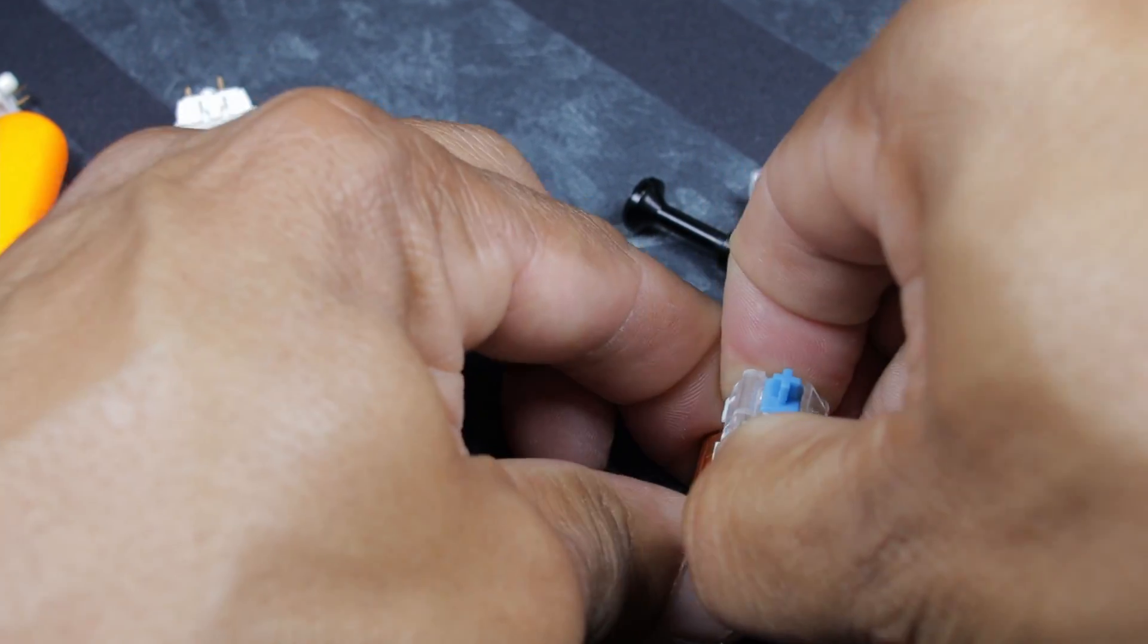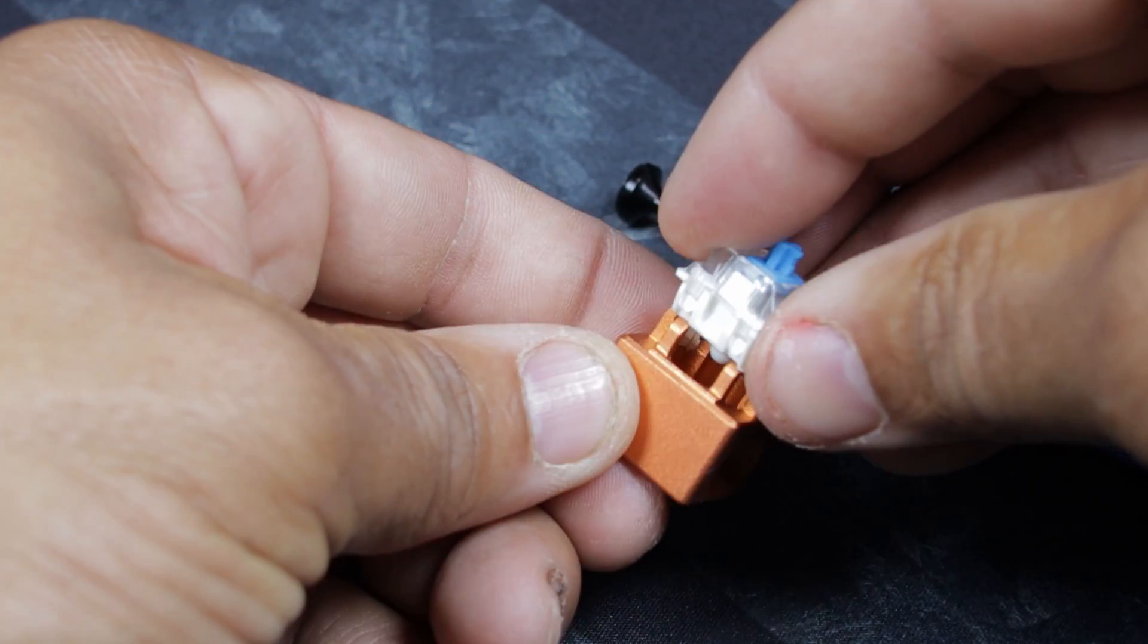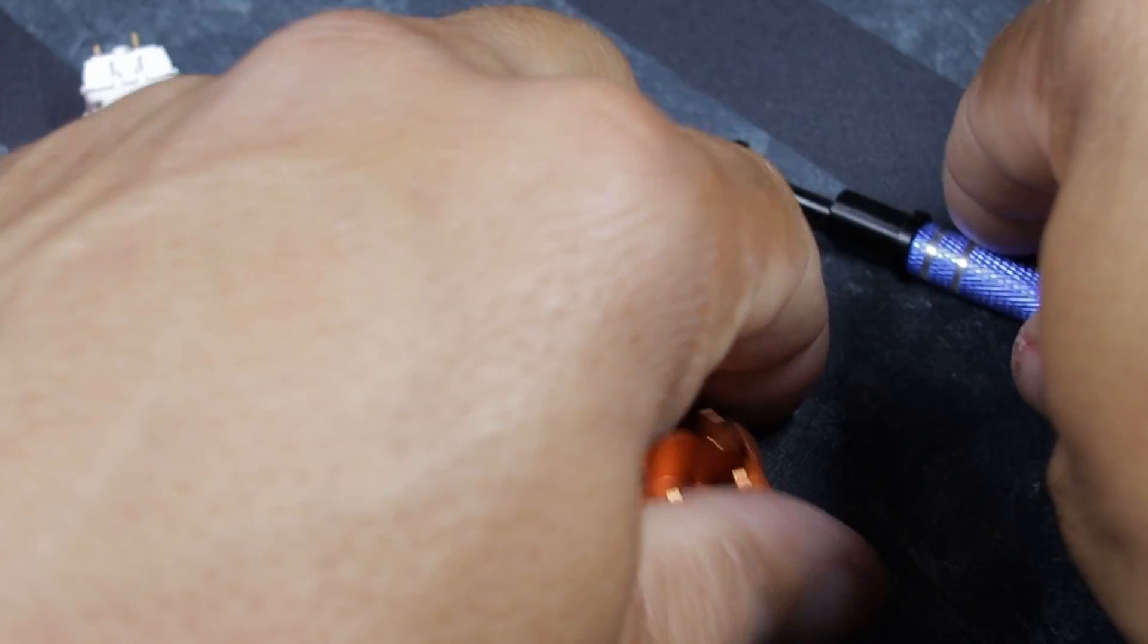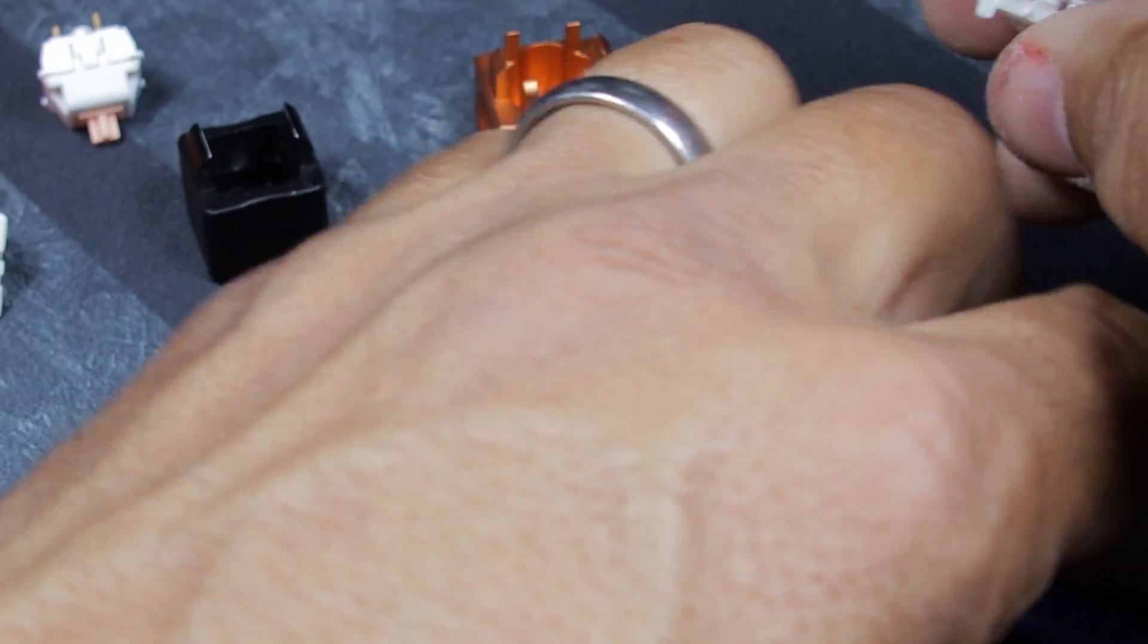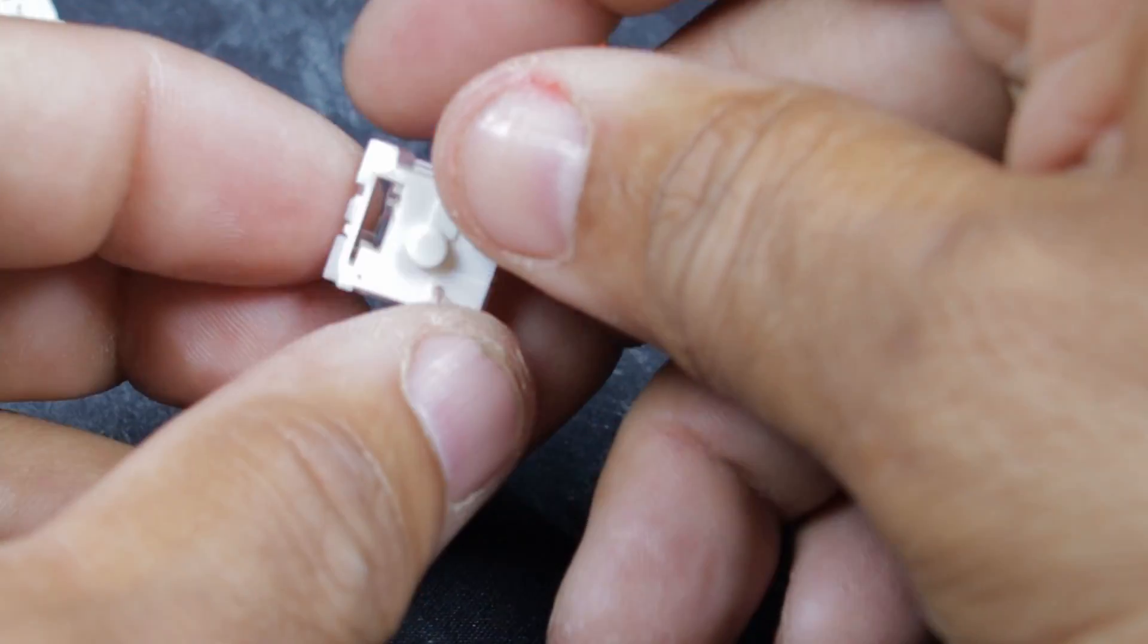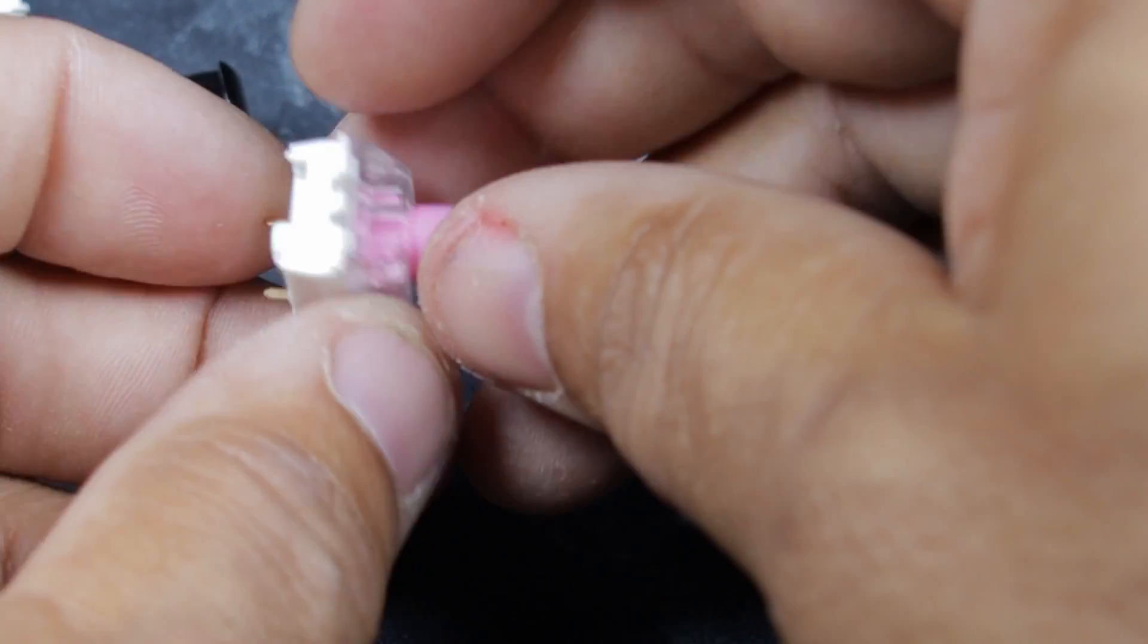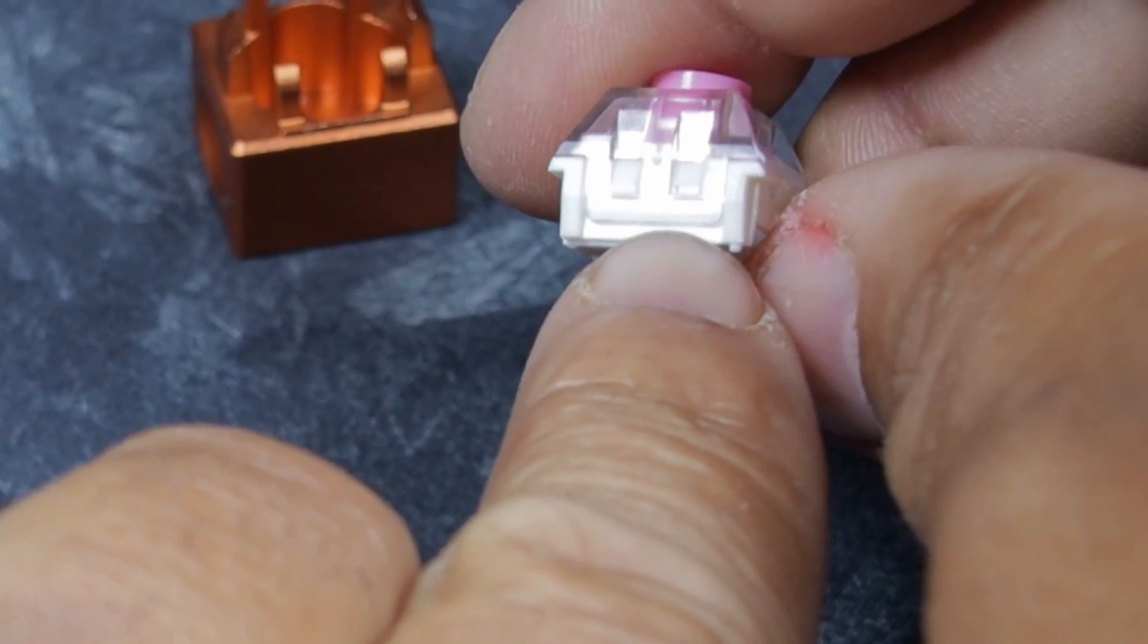These are all MX style switches so they use the same switch puller, something to just connect to those four little legs there. And then one switch I want to show you to demonstrate the difference, this is a Kale box switch. It's a silent switch also so I have a couple different things to talk about. But this is a Kale box red or pink, heard it referred to as both. This is basically Kale's version of a silent red, takes a different switch opener. You can see it's got a long tab there that runs the length of the switch.